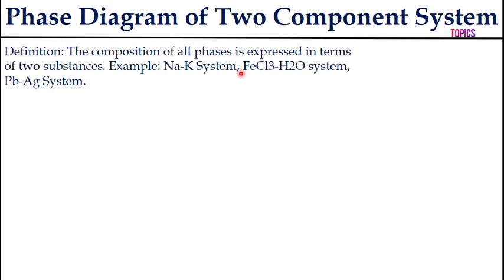Now we need to understand the phase diagram of a two-component system. Here you consider two components — for example, the sodium-potassium system, the FeCl₃-water system, and the lead-silver system. All of these are two-component systems, where the composition of all phases is expressed in terms of two substances.